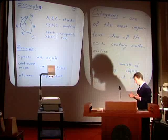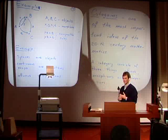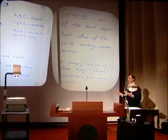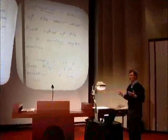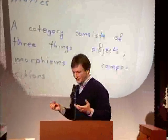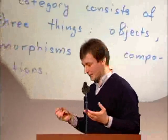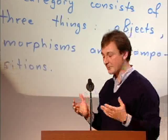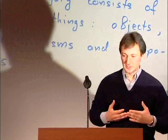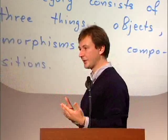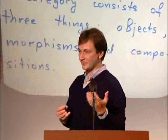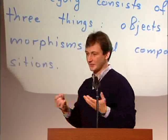A second example of a category: objects are all spaces which exist, and morphisms between two spaces are continuous maps between them. Continuous maps can be composed. What was somewhat amazing to me personally is that for very many classes of mathematical objects, there are natural categories which correspond to them. For most classes of mathematical objects, we can construct a category whose objects are those objects, morphisms are natural ways of connecting one object to another, and there is some kind of composition.